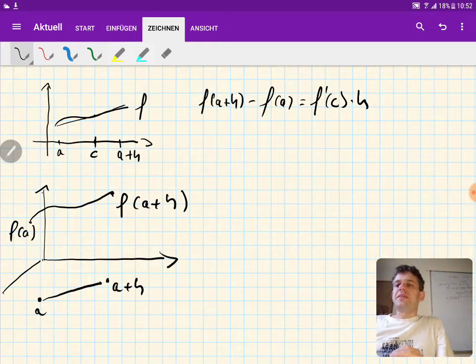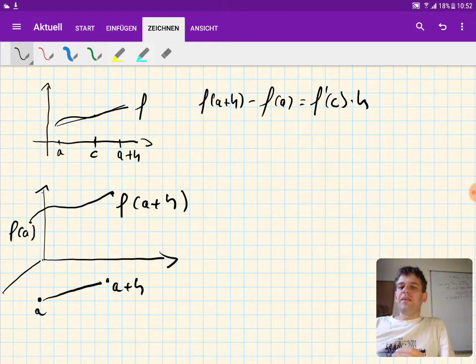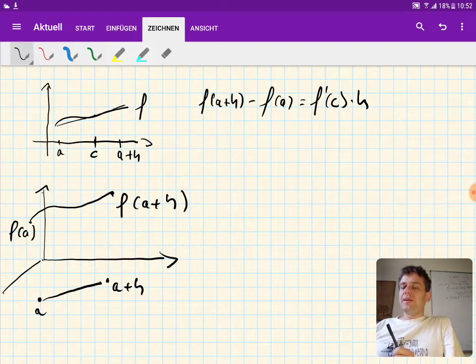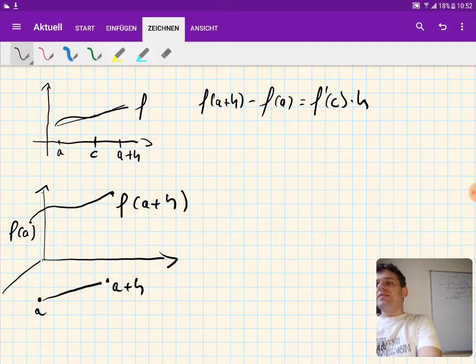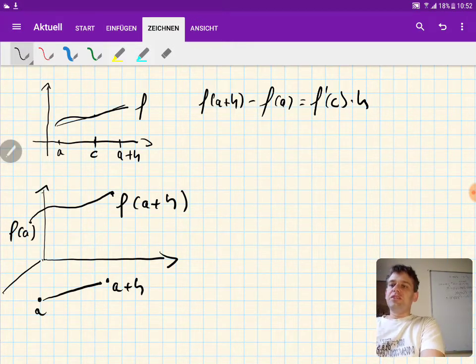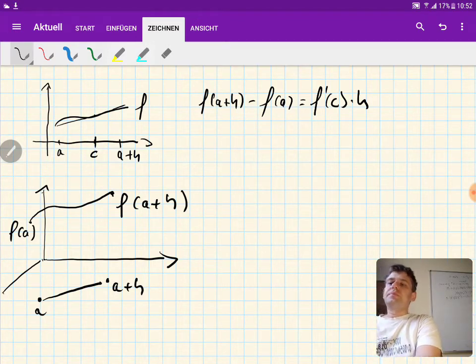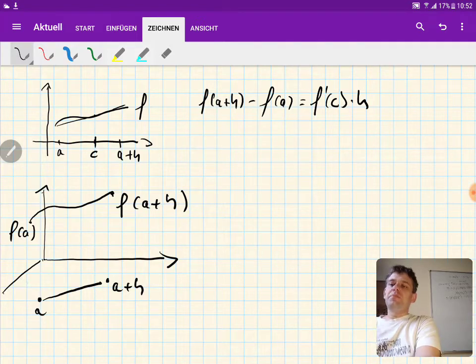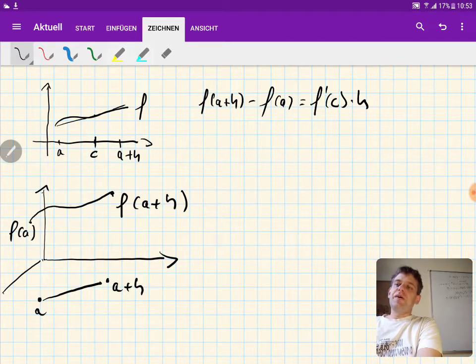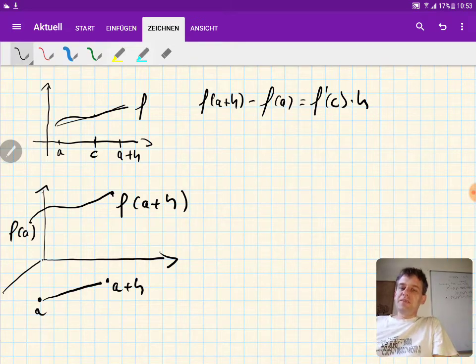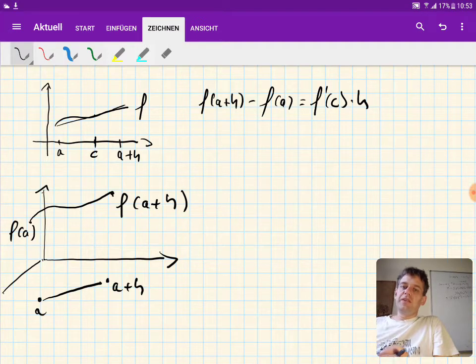And now there is a multi-dimensional version of this theorem and this is what we are going to look at in this lecture. So to get some intuition, have a look at this second picture. Here we have our plane and here we have our function which is now a function of two variables.